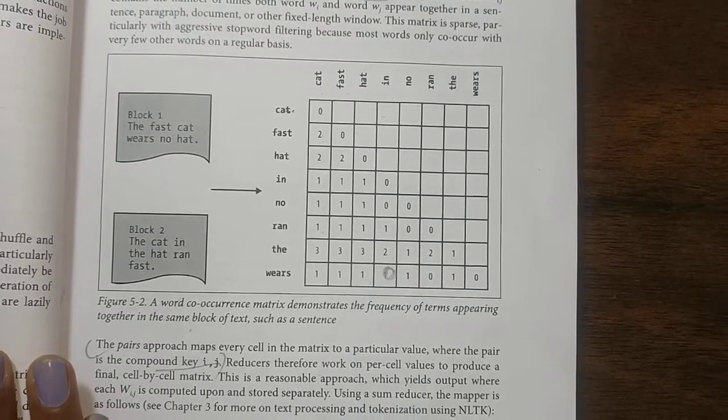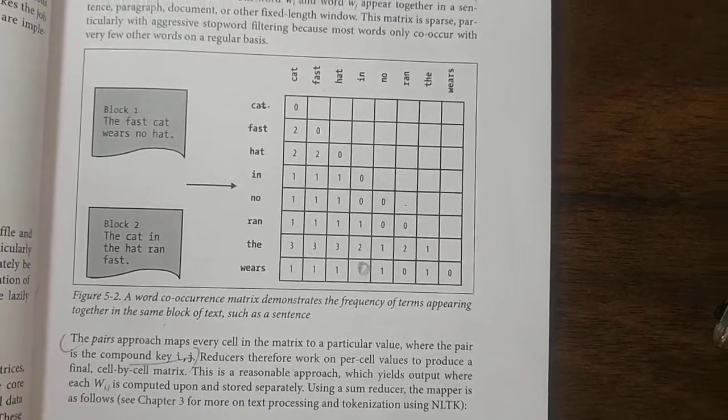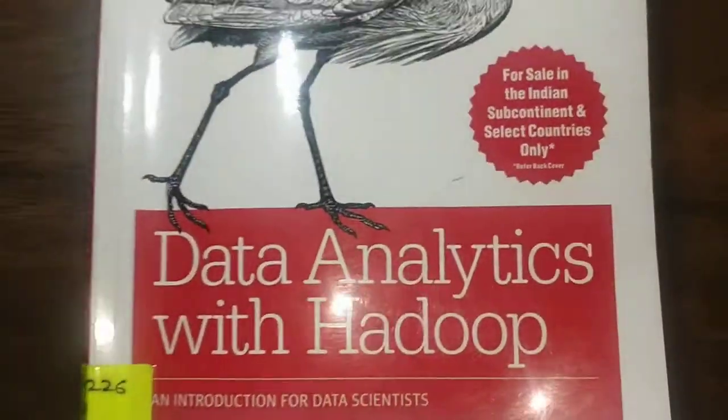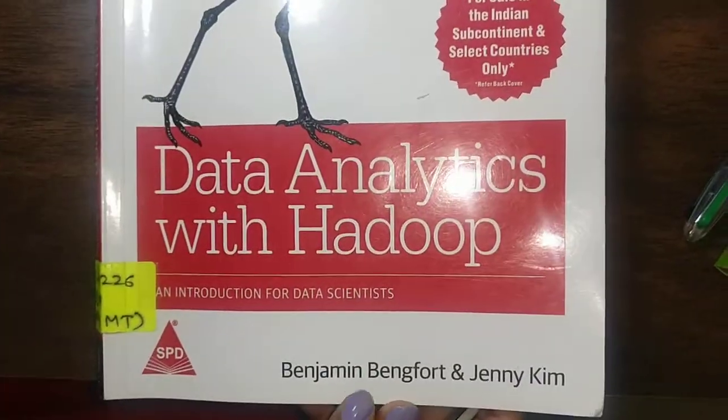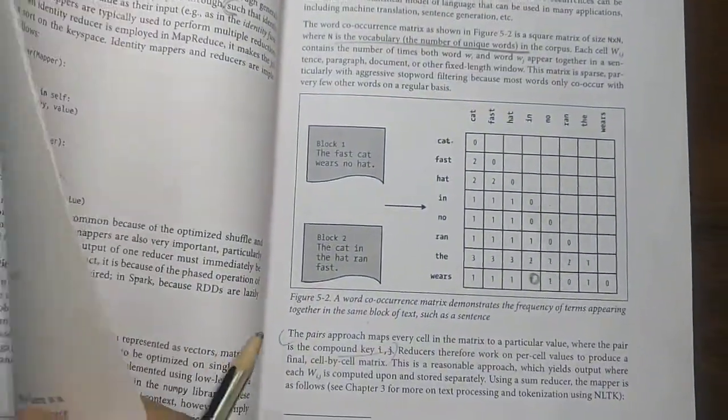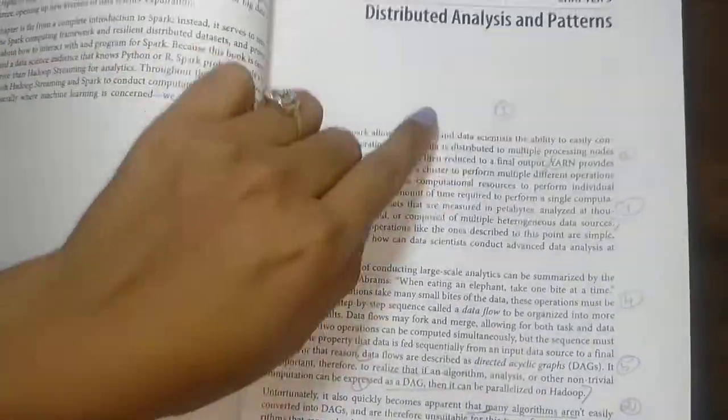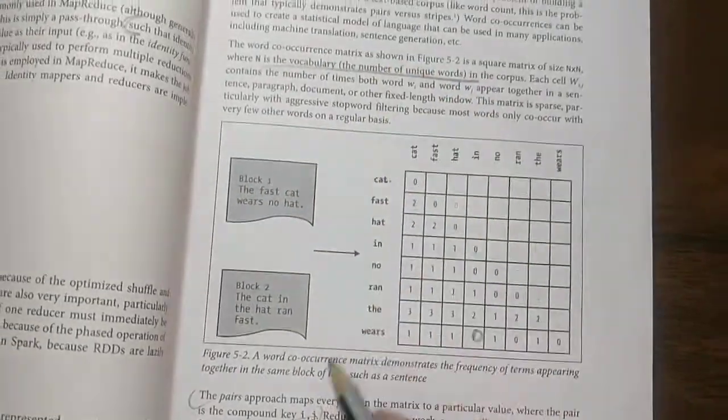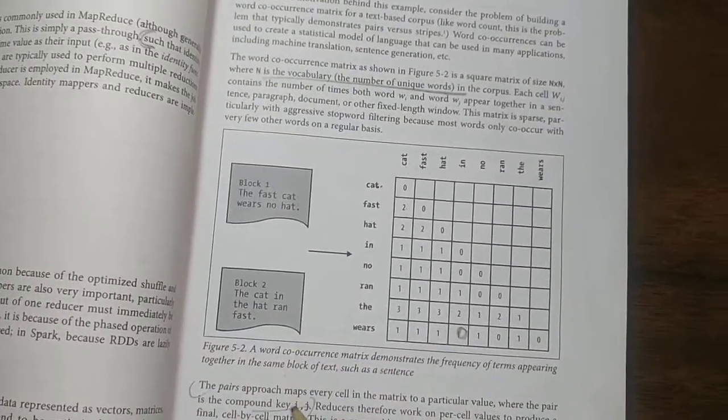We are going to look at the word co-occurrence matrix, an example in big data analytics from Big Data Analytics with Hadoop by Benjamin Bankford. This is chapter number five, distributed analysis and patterns. In the case of word co-occurrence matrix, what we are trying to do